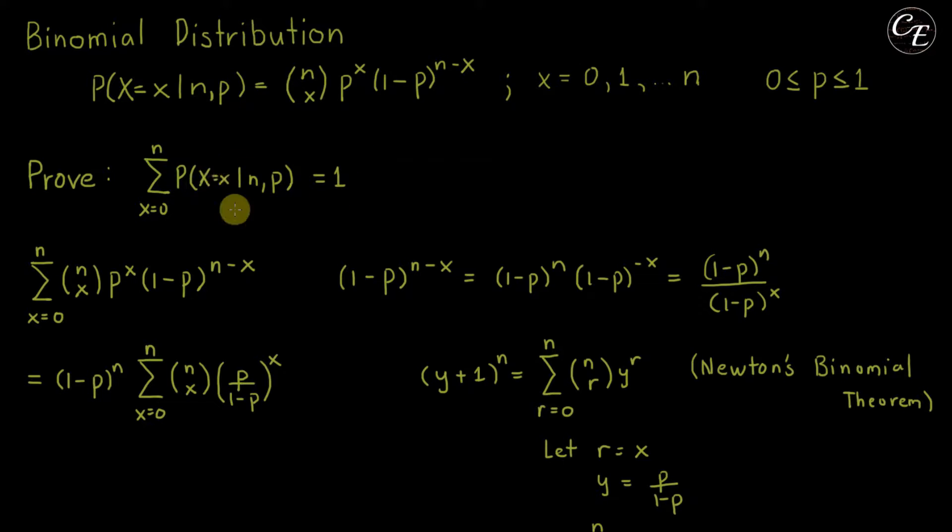Now let's start with our proof. Summation of the probability mass function, in this case we're going to use this one. This is x from 0 to n, so we'll have here x is equal to 0 until n.